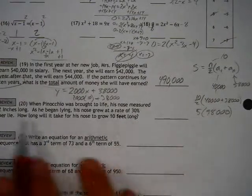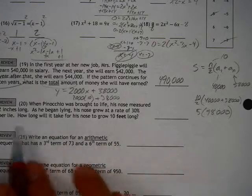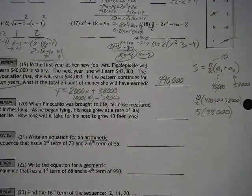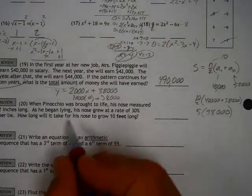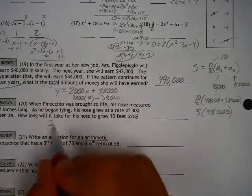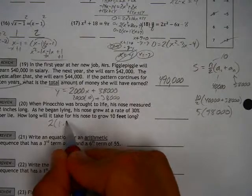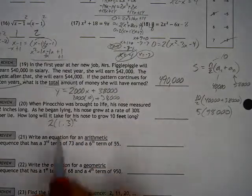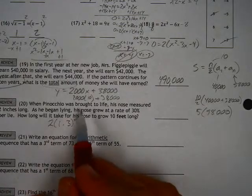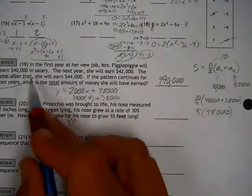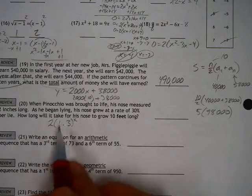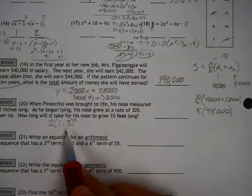Now Pinocchio was brought to life. His nose measured 2 inches long. As he began lying, his nose grew at a rate of 30% per lie. How long did it take for his nose to grow a total of 10 feet long? So he grew at a rate of 30%. So 2 inches long is the initial value times 1.3 to the x power. So each lie, it's going to be 30% longer than it was before. When I mentioned telling the difference between these, this is growing at a constant rate, so that's the equation we would create. Since this is growing at a percentage, that's the equation we would have to use.